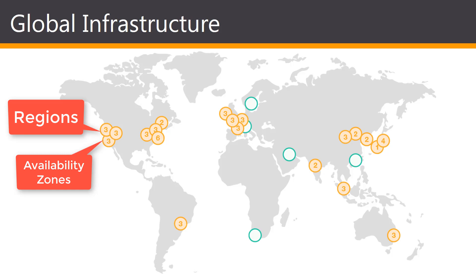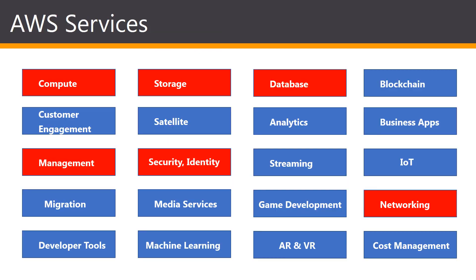Availability zones, also referred to as AZs, consist of one or more discrete data centers, each with redundant power, networking, and connectivity housed in separate facilities. These availability zones offer the ability to operate production applications and databases that are more highly available, fault tolerant, and scalable. The AWS cloud operates more than 57 availability zones within 19 geographic regions around the world. For the exam, just know the difference: a region is a geographic location, and an availability zone comes within a region — each region has a minimum of two availability zones.